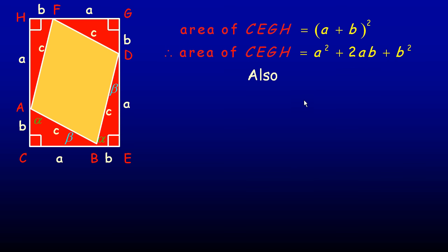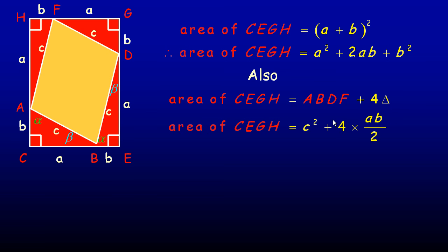Now, another way to calculate the area of the entire figure: we could think of it as the area of the middle square — the one we proved on the last page — plus the area of the four triangles. The inner square ABDF is a C by C square, so its area is C squared. The four triangles each have a base and height of A and B, so the area of any one triangle is A times B over 2. There are four of them, so we multiply by four: four times AB over 2 simplifies to 2AB. So the total area is C squared plus 2AB.